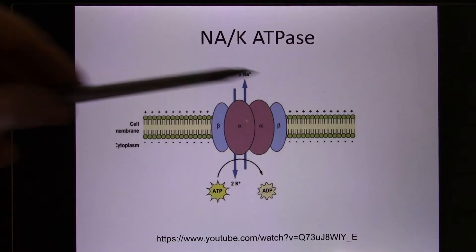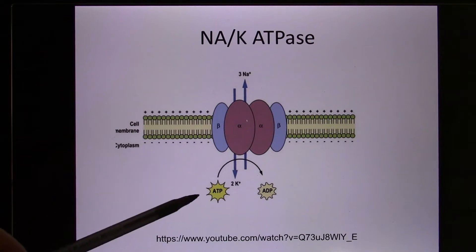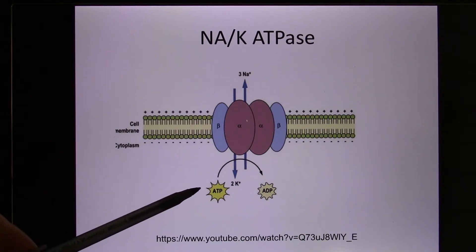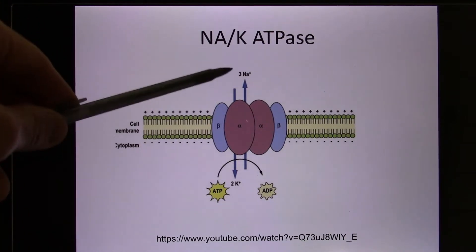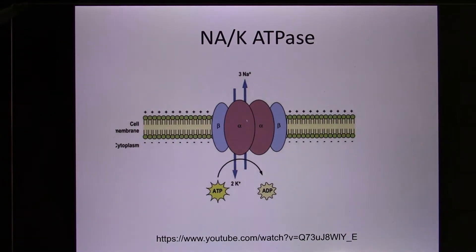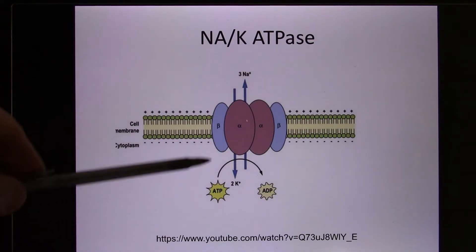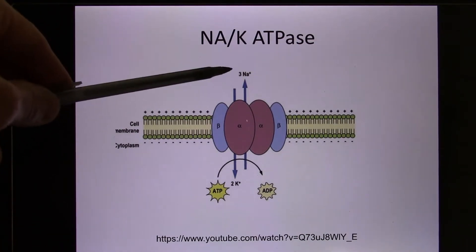How did this happen? Because of the sodium-potassium pump. This is a primary active transporter — we use ATP as an energy source. Every time it works, it pumps two potassium in and three sodium out. So you pump potassium in and sodium out, but they are not pumped equally: only two potassium and three sodium.